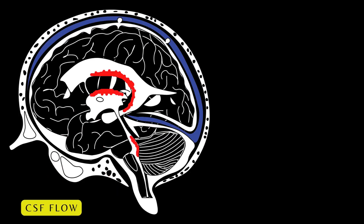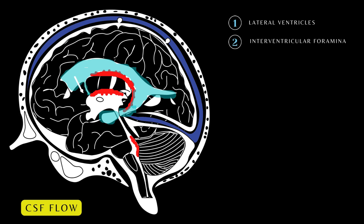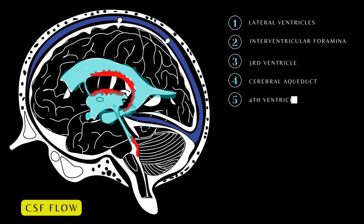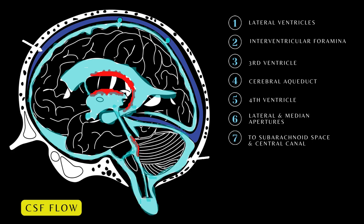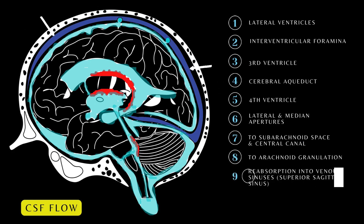Let's look at an overview of the flow of cerebrospinal fluid within the ventricular system. Cerebrospinal fluid produced in the lateral ventricles passes through the left and right interventricular foramina to the third ventricle. CSF flows through the cerebral aqueduct to the fourth ventricle. It passes inferiorly into the central canal and leaves by the lateral and median apertures to enter the subarachnoid space, and then to arachnoid granulations, where reabsorption into the venous sinuses occurs. Here, CSF is absorbed into the superior sagittal sinus and ultimately into the venous bloodstream.